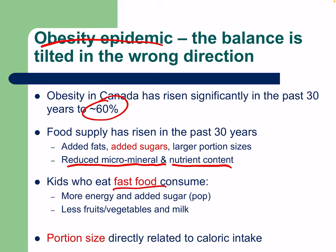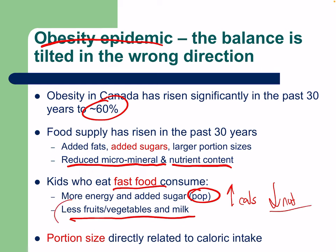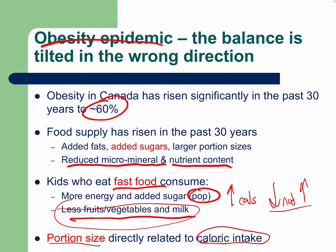For example, kids who eat fast food consume more energy and added sugar through pop, and less through fruits, vegetables, and milk — increased calories but decreased nutrition. You could eat more whole foods, get much more nutritional value, and consume fewer calories. Portion size is directly related to caloric intake. The best habit is simply not going back for seconds — we usually don't need them, especially if we eat nutrient-dense food.